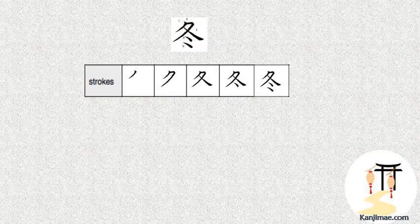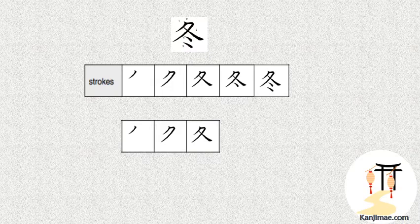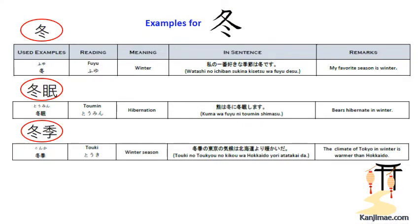Now let's check the stroke orders and examples. We have three examples: first, Fuyu meaning winter; second, Toumin meaning hibernation; and third, Touki meaning winter season. Please try to see them in the sentence examples.